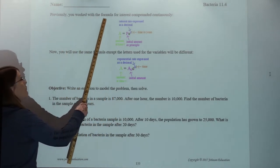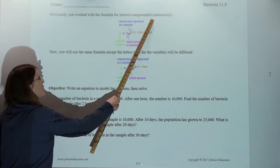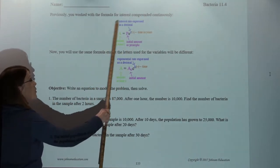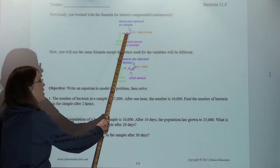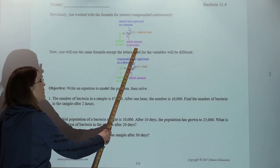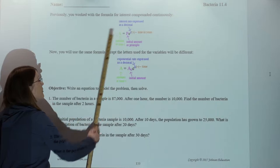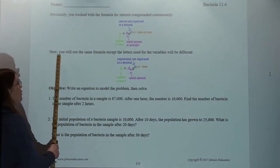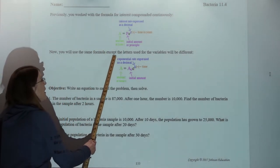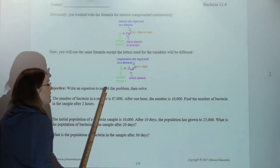Previously you worked with the formula for interest compounded continuously. Here's our equation. If you recall, P represented your principal, R represented your interest rate, expressed as a decimal. So now you will use the same formula, except the letters used for the variables will be different.